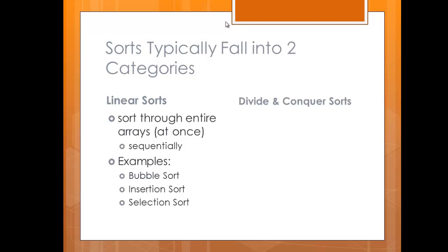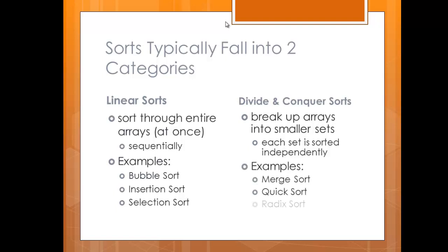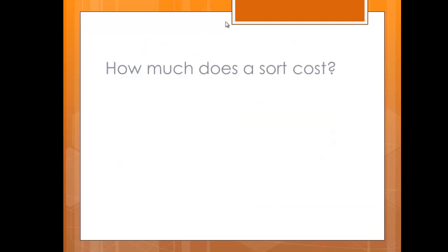Then, the other kind are the divide and conquer sort. These will break up arrays into smaller sets or subsets, and each set will be sorted independently. Examples of the divide and conquer sort would be merge, quick sort, radix sort. Again, these are just examples. These are very common ones. So, one of the things we've got to look at is the cost of a sort. What is it going to require us to do this particular sort?